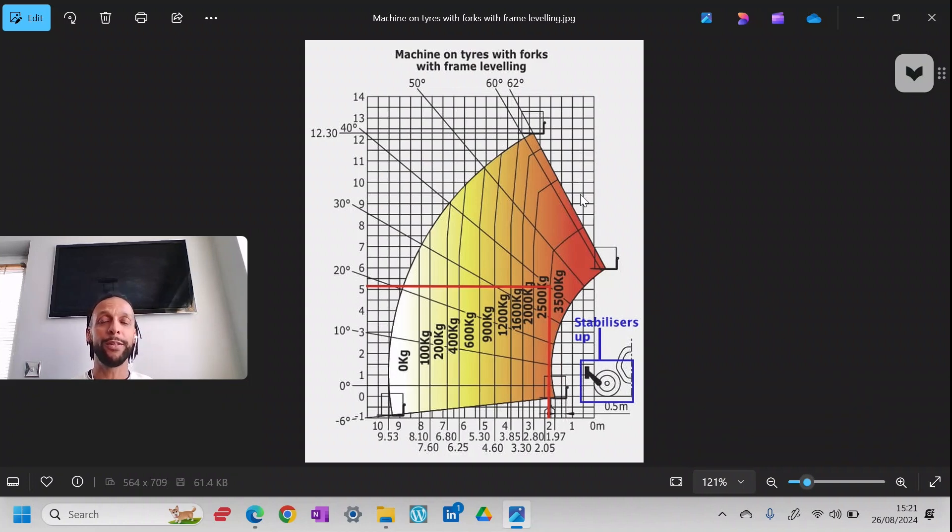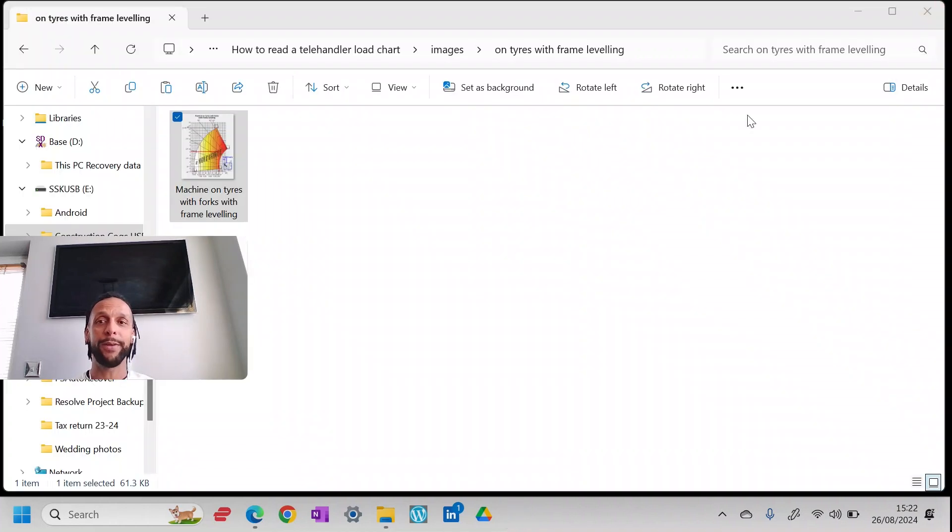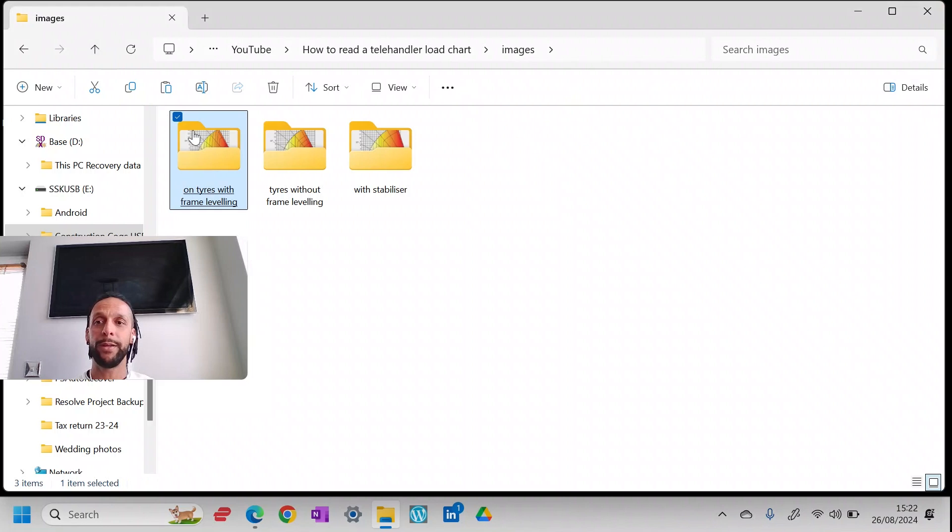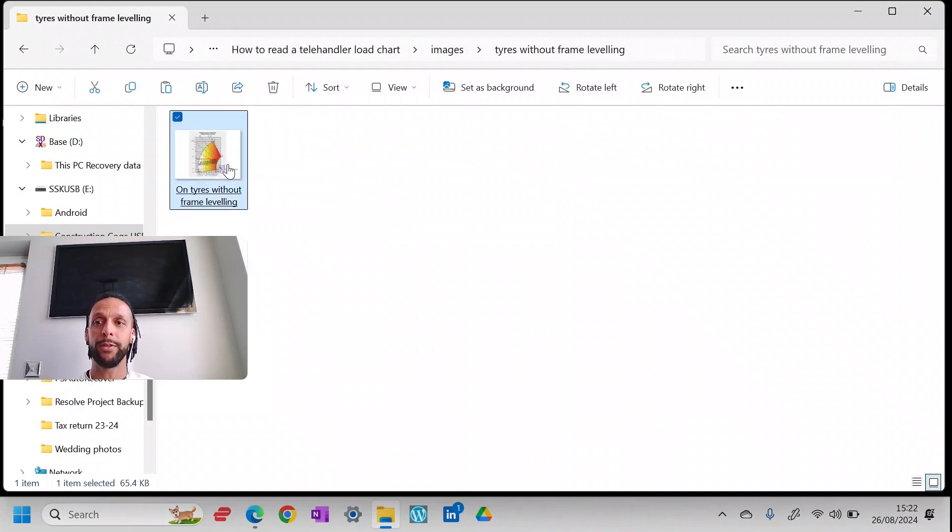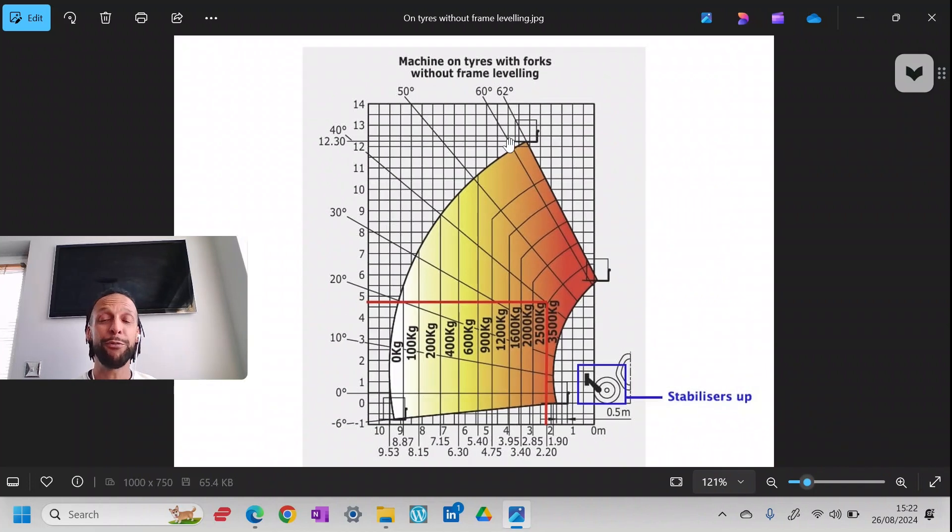The next one is on tires without frame leveling. As you can imagine, you'll be able to lift less. So there isn't much difference in capacity in this one except you won't be able to go quite as high.